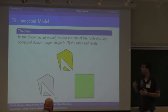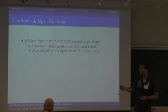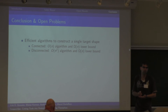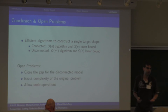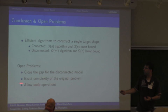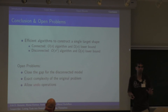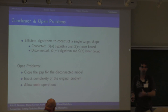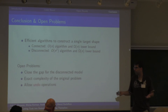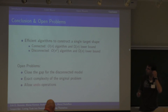So what I showed here is that for the connected model there is an algorithm with a linear number of operations, and there's a lower bound of a linear number of operations as well. For the disconnected model, there's still a gap between the n-squared upper bound and a linear lower bound, so it would be nice to close that gap. We should probably also eventually look at the exact complexity of the original problem, since we just went with the algorithmic approach. It would also be nice to consider the undo operations that the game does allow, which we completely ignored for this paper. The undo operations are already more or less work in progress. We'll just keep on working on this — thank you for your attention.